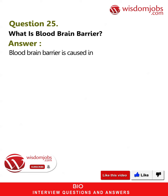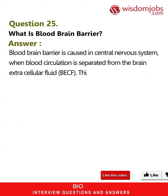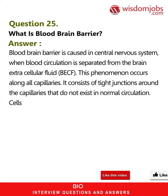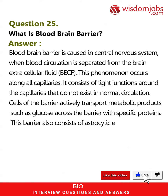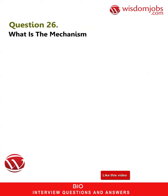Question 25: What is the blood-brain barrier? The blood-brain barrier occurs in the central nervous system when blood circulation is separated from the brain extracellular fluid (BECF). This phenomenon occurs along all capillaries and consists of tight junctions around the capillaries that do not exist in normal circulation. Cells of the barrier actively transport metabolic products such as glucose across the barrier with specific proteins. The barrier also consists of astrocytic end-feet and a thick basement membrane.